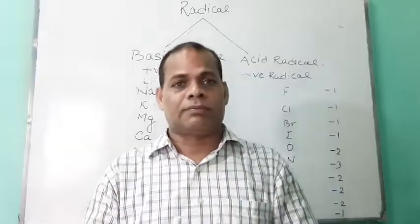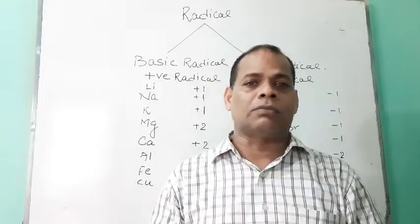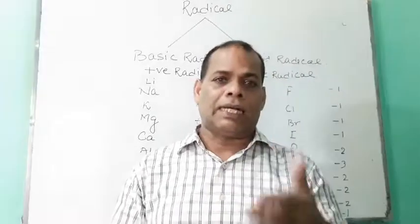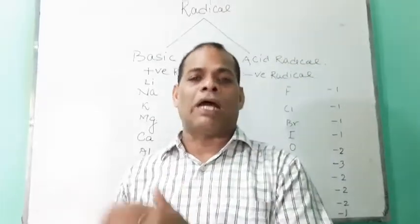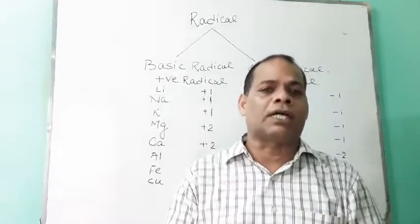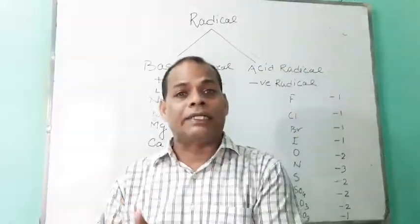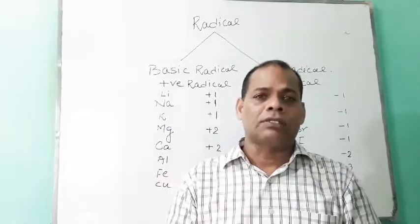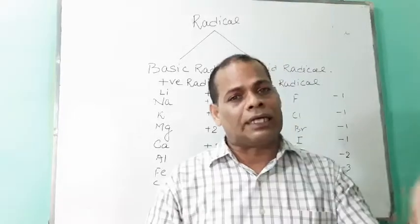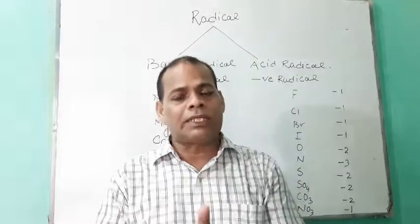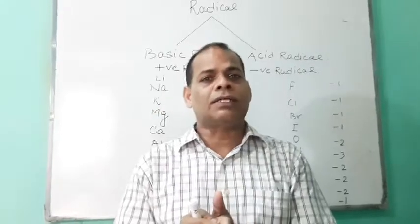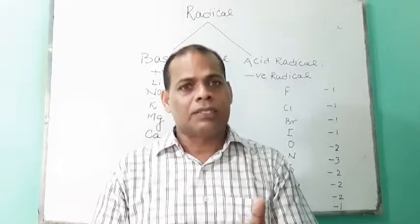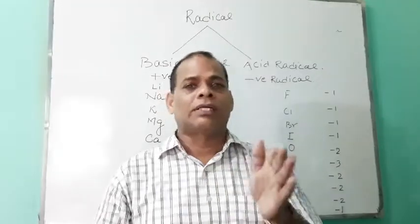What is a radical? An atom or group of atoms which has a net electrical charge is called a radical. We have two types of radicals: positive radical and negative radical. Positive radical is also known as basic radical, and negative radical is also known as acidic radical.